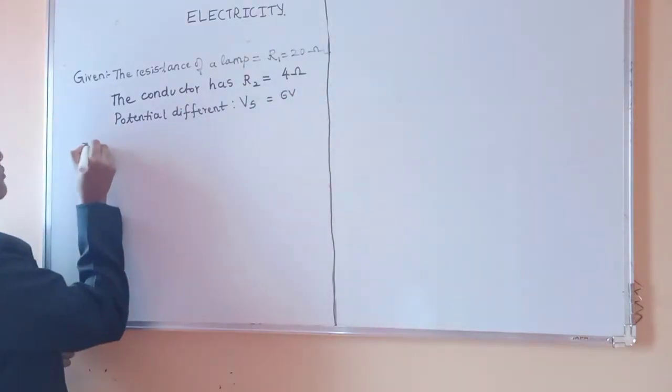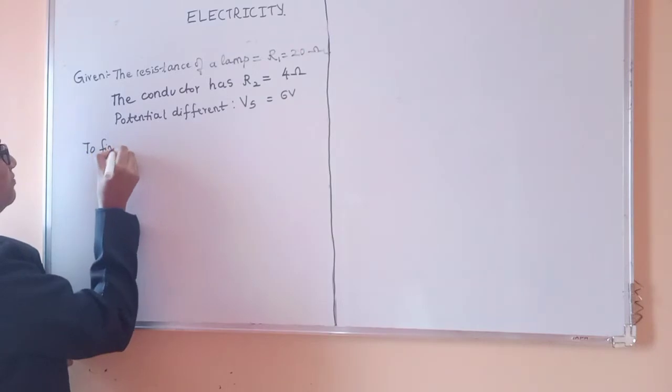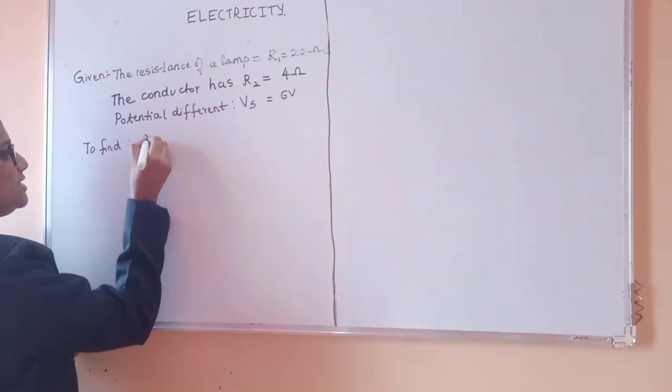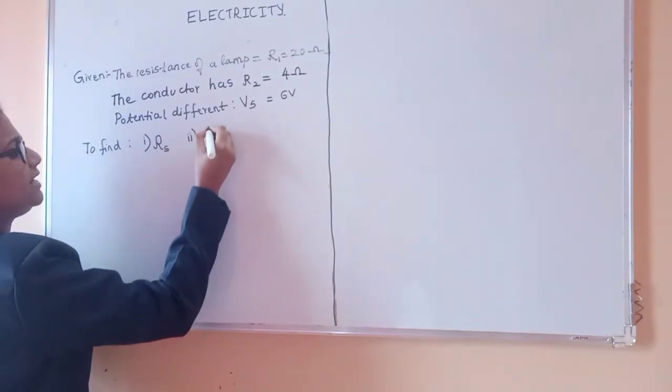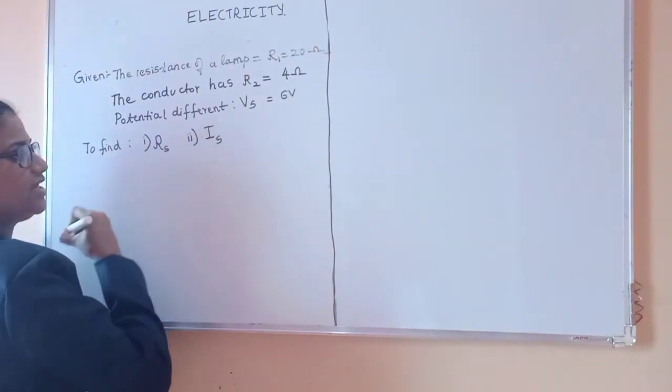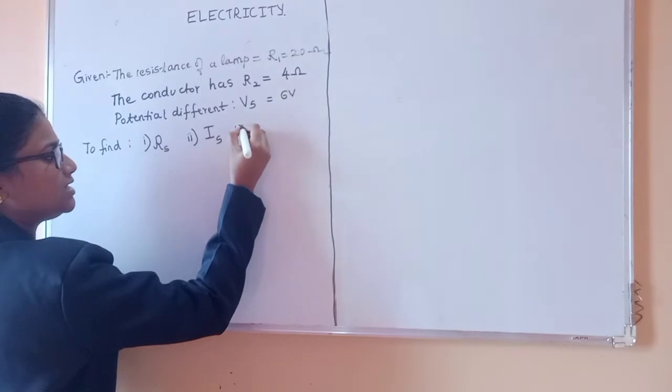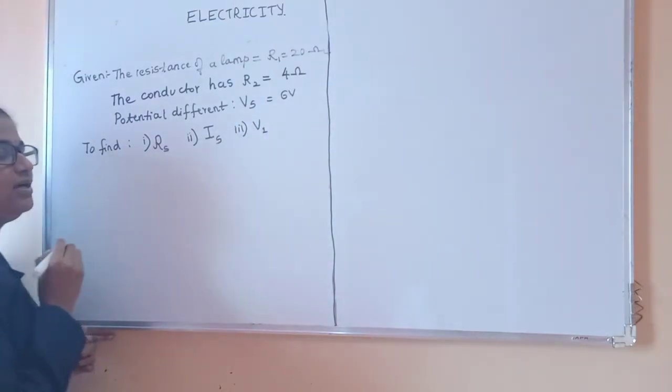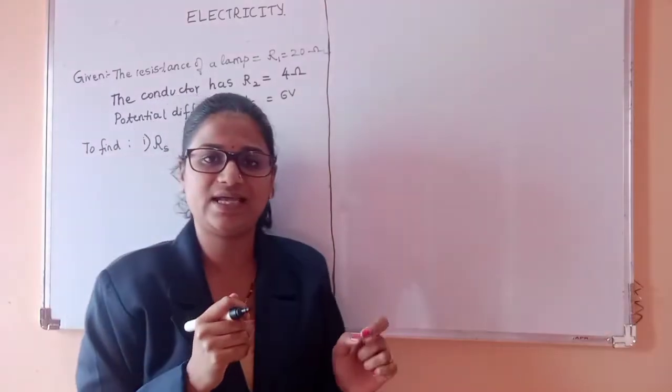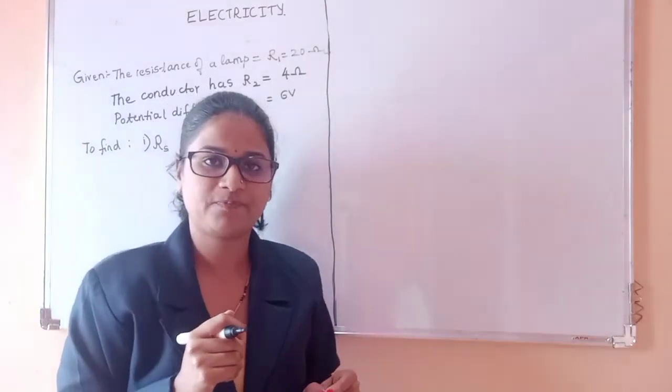So what we have to find - to find the first one they asked is resistance in series Rs, the second they asked is current in the series Is, the third one they asked is potential difference across electric lamp and conductor, so we should take it as V1 and V2.